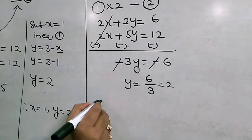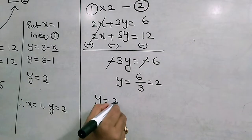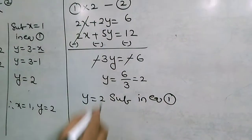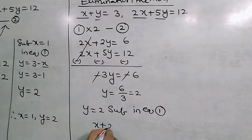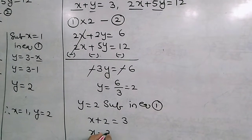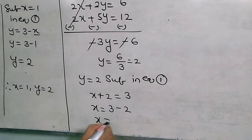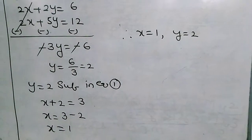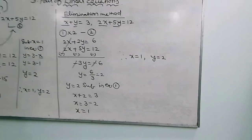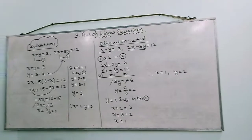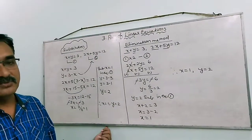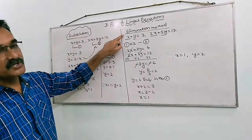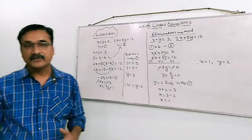Now, substituting y equals to 2 in equation 1: x plus 2 equals to 3, so x equals to 3 minus 2, giving x equals to 1. Therefore x equals to 1 and y equals to 2 is the solution of the given pair of linear equations. If you observe, in both cases we got the same solution. That means we can use either the substitution method or the elimination method to solve the pair of linear equations.